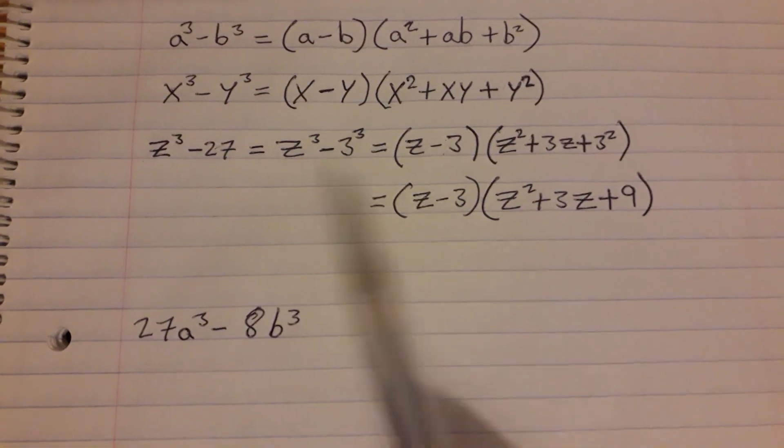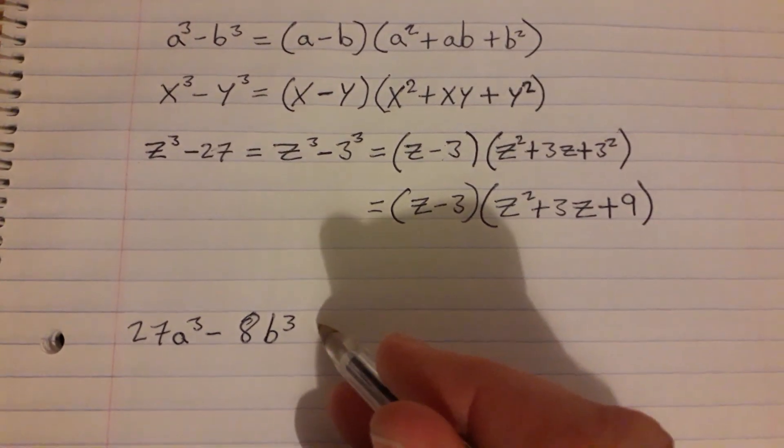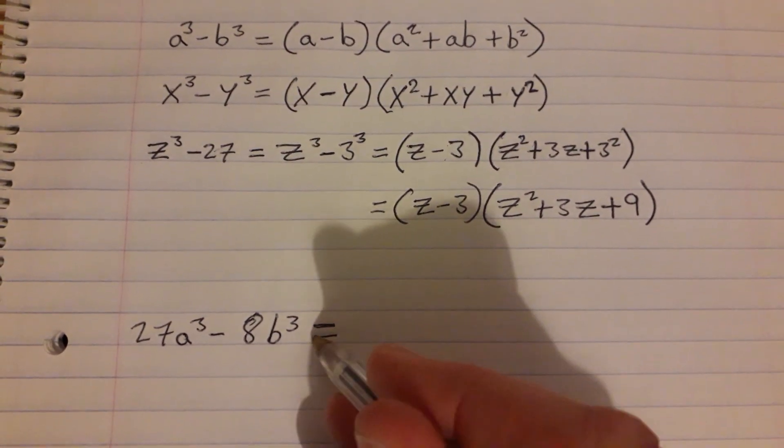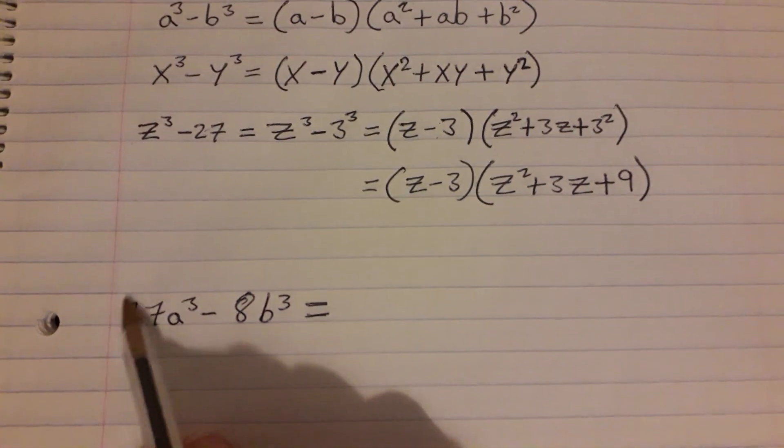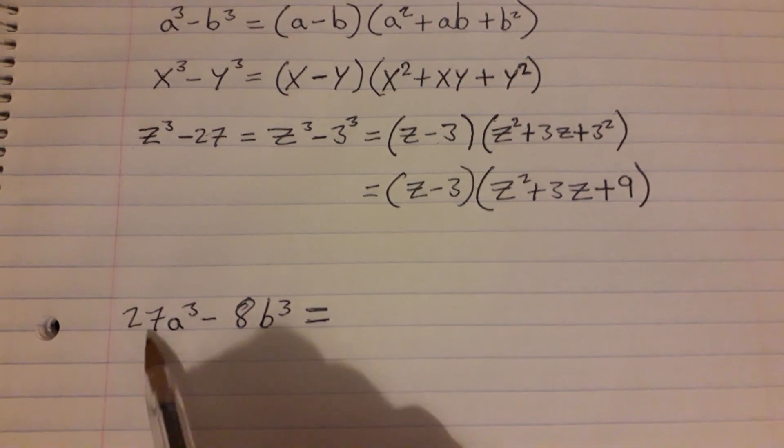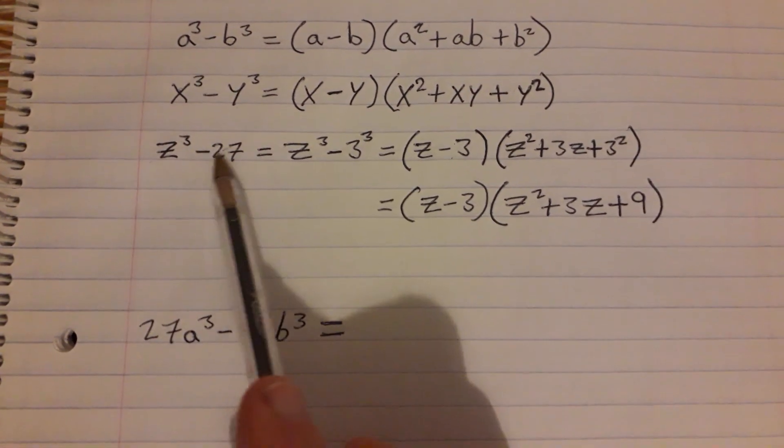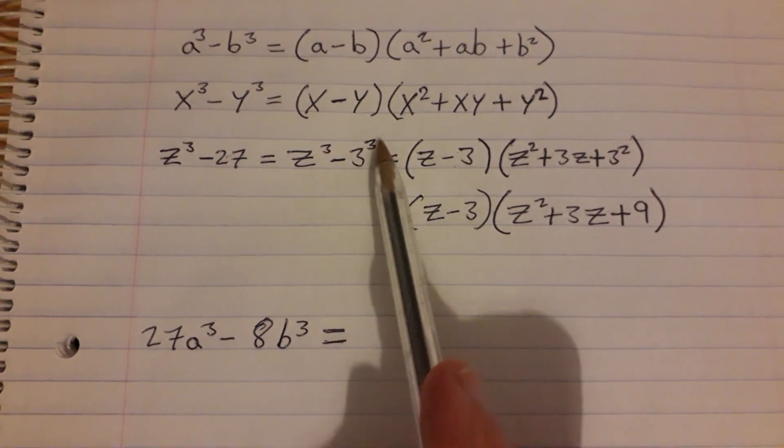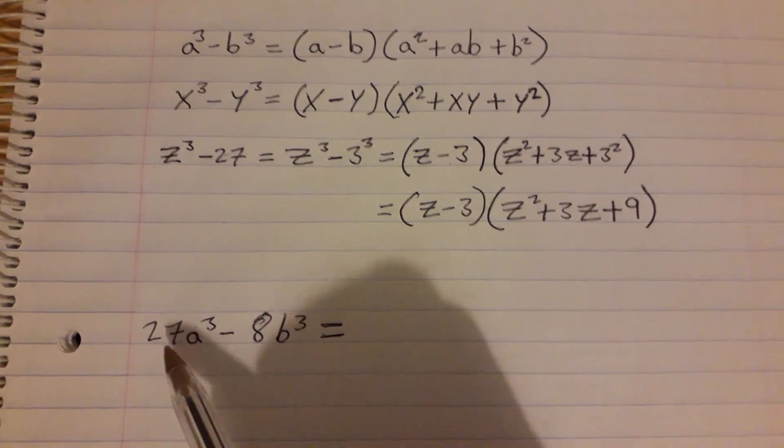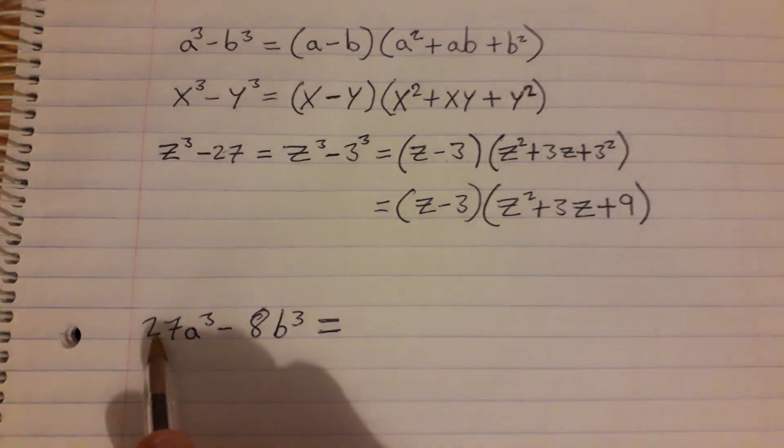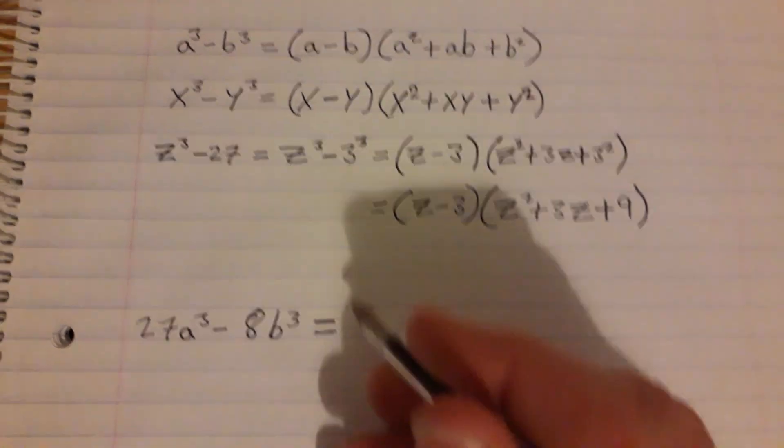So just like in difference of two squares, we look at the number part of it and we say can 27 be written as something to be cubed. And we know from our previous example up here that 3 cubed is 27.